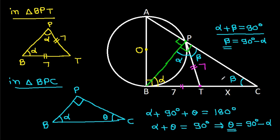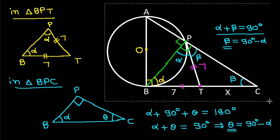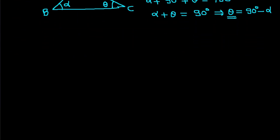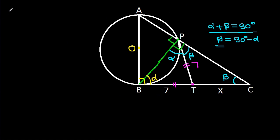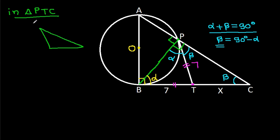So this angle will be beta. Now in triangle PTC, these two angles are equal — both are beta — so PT will be equal to CT. PT is 7, so CT will also be 7. Therefore X is 7.